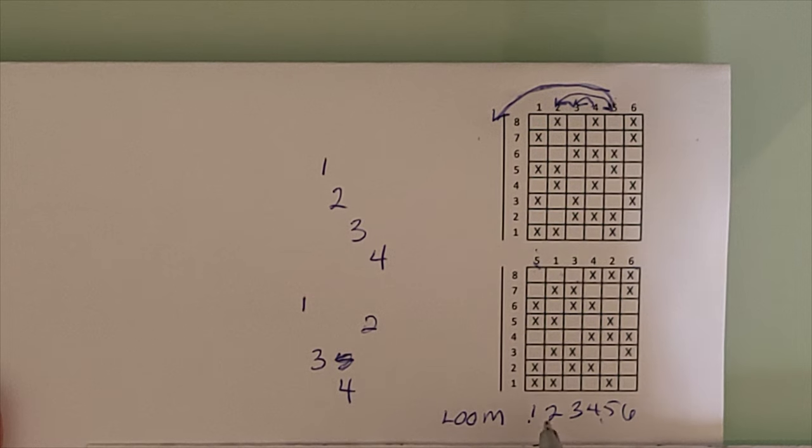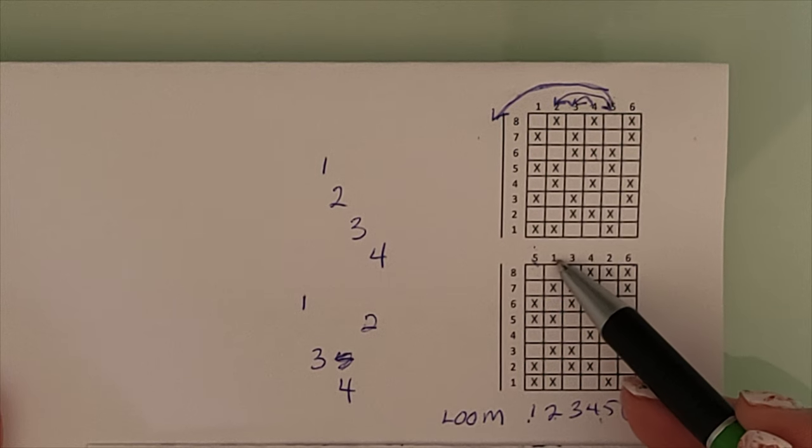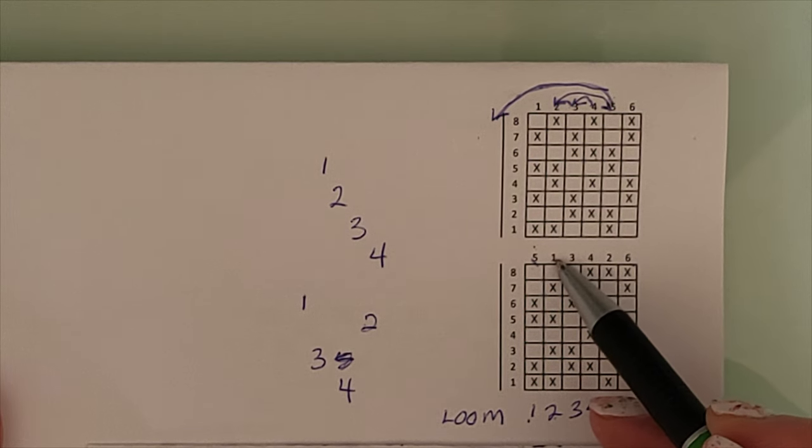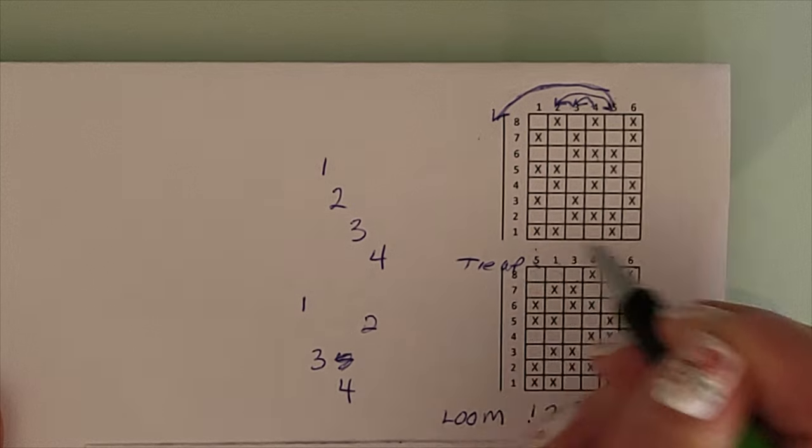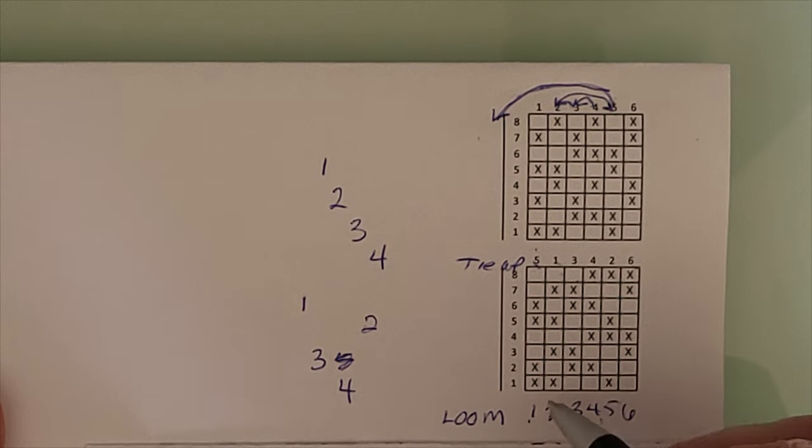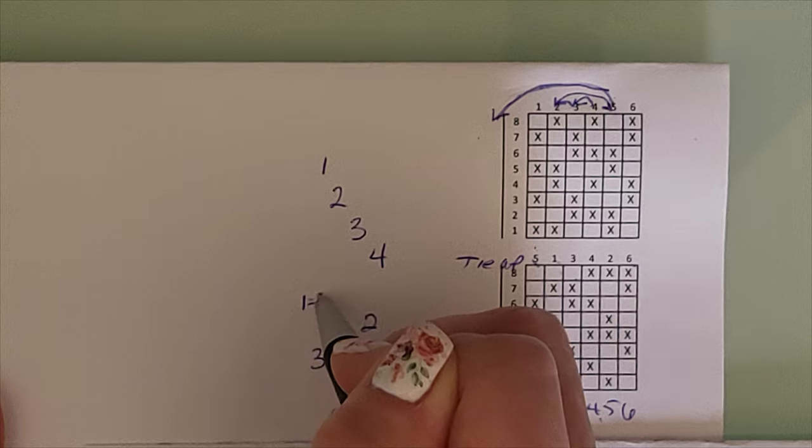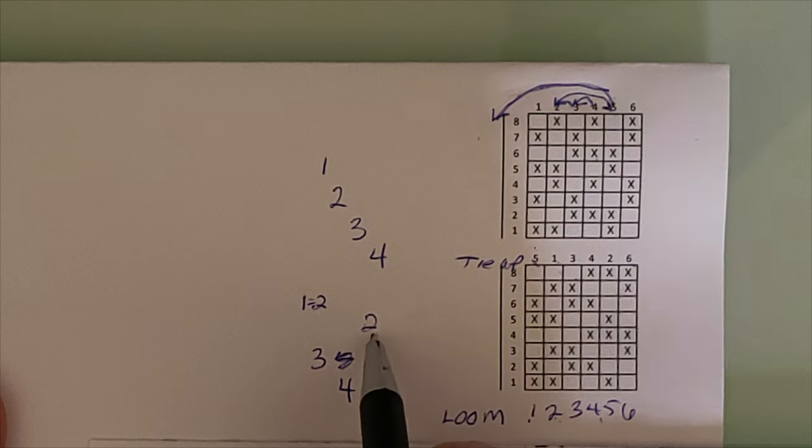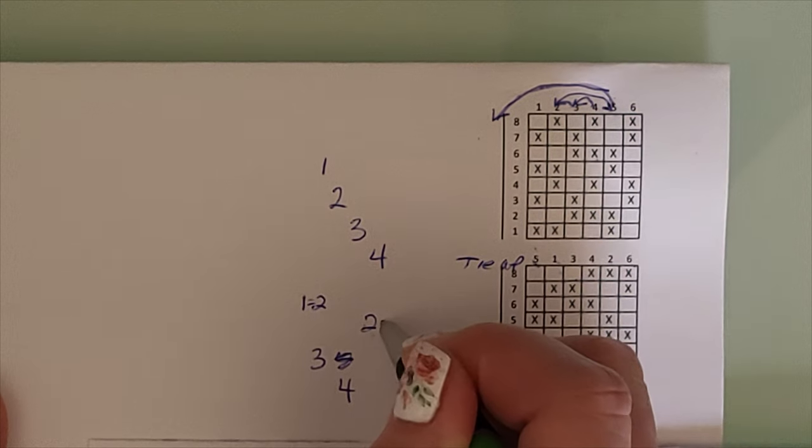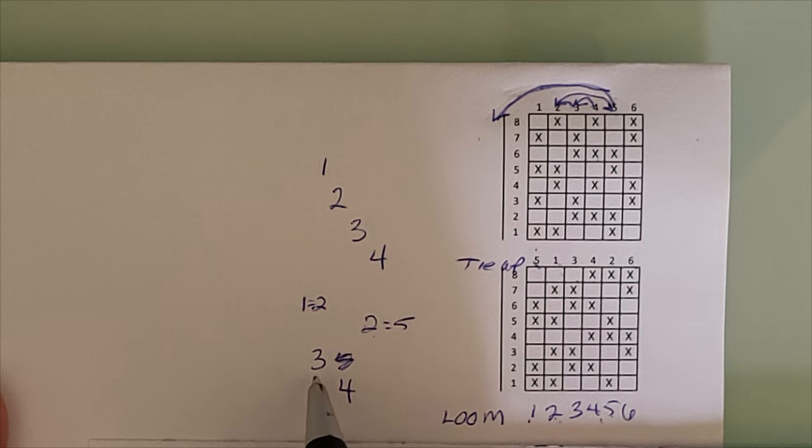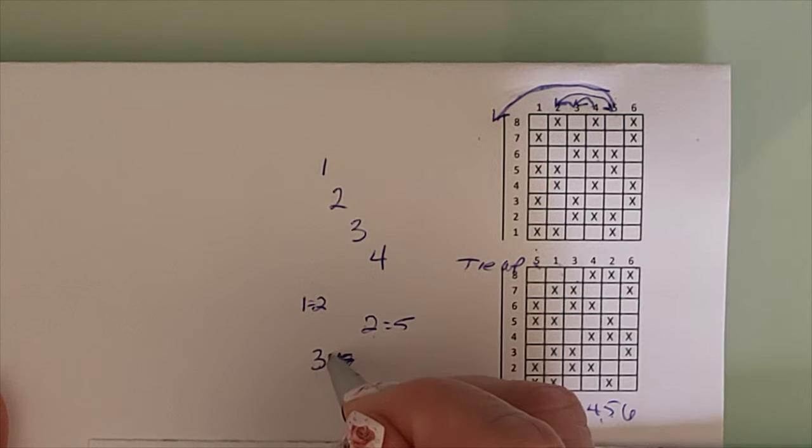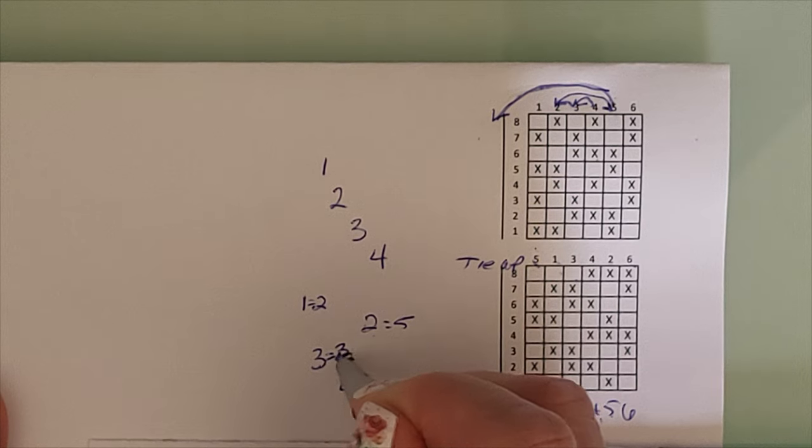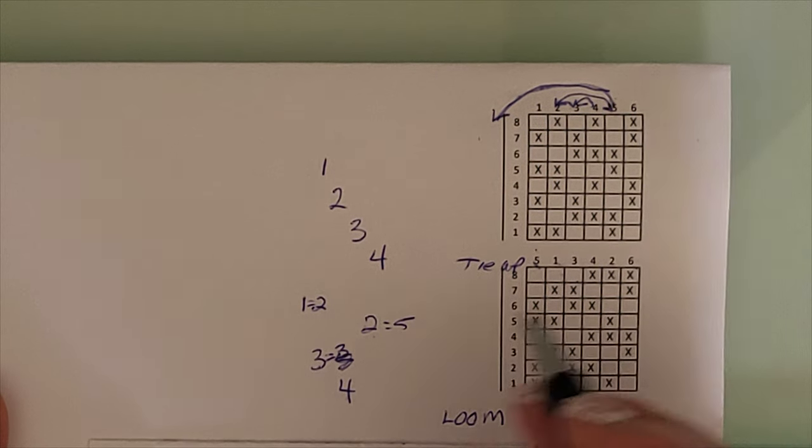So I need to rewrite this. On my loom, the treadling, or the tie-up number one, we'll call this tie-up number one, is treadle two. So we'll say that's a two. Tie-up two is treadle five. Tie-up three is still tie-up three. And tie-up four is still treadle four.